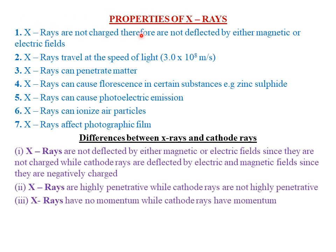The first property is that X-rays are not charged; therefore they are not deflected by either magnetic field or electric field, unlike other rays. For example, cathode rays are usually negatively charged and hence can be deflected by both electric and magnetic fields.